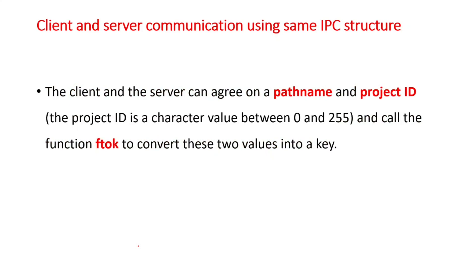In the third approach, the client and server agree on a path name and a project ID, which are passed to the FTOK function to convert into a key. The path name and project ID are the two arguments that both the client and server agree upon, and this is passed to FTOK for generating a key. Using the key obtained, we can then follow the previous approach of sharing the key in a common header.